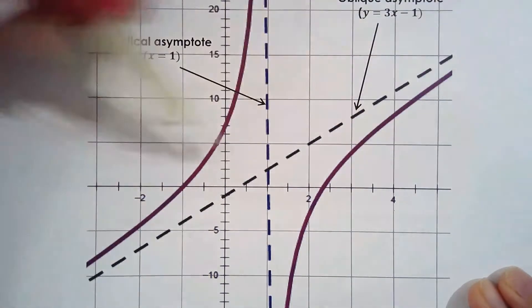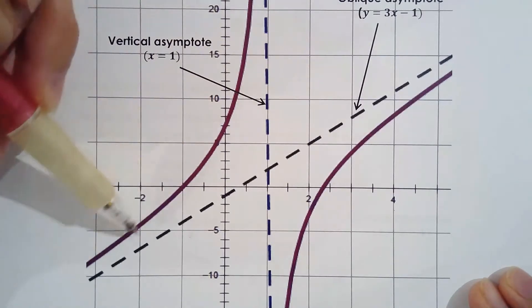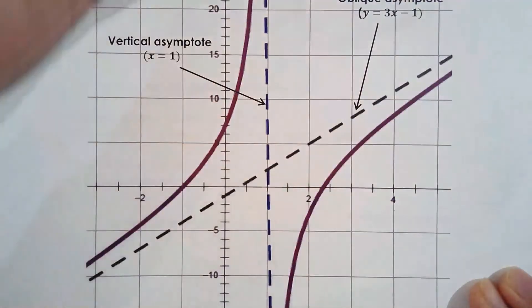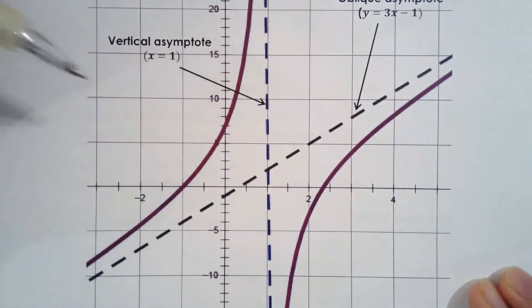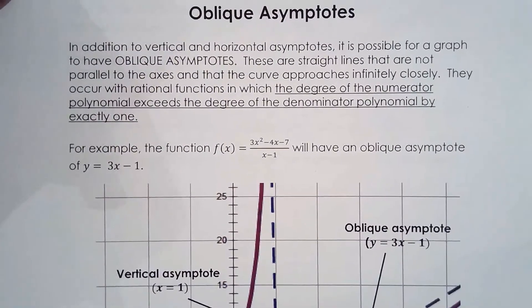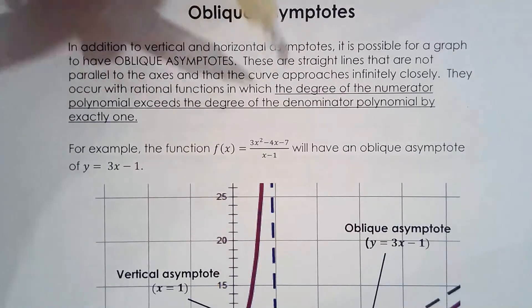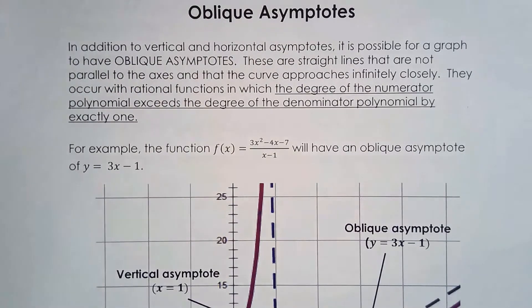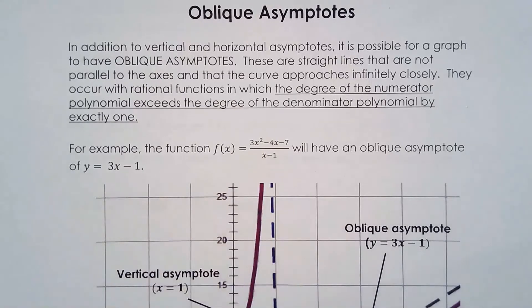Just like a horizontal asymptote, the function approaches the oblique asymptote as you go towards positive infinity or negative infinity. Now, back to our two key questions: how do we know one occurs, and how do we find its equation? The answer to the first question is pretty simple — oblique asymptotes occur with rational functions in which the degree of the numerator exceeds the degree of the denominator by exactly one. For example, degree two in the numerator and degree one in the denominator means there will be an oblique asymptote.